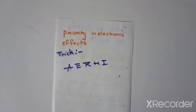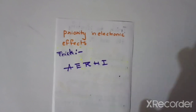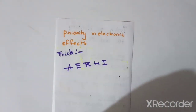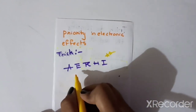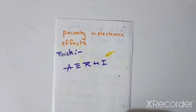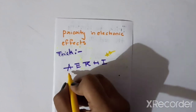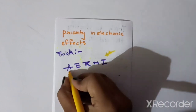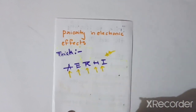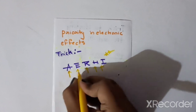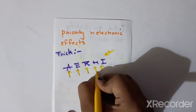Next, let's discuss these electronic effects and how we use them — for example, in acidic strength and substitution reactions. The order to follow is: aromaticity, then equal resonance, then resonance, then hyperconjugation, then inductive effect.